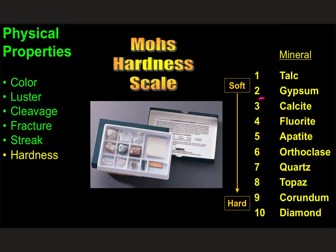Quartz — the most common mineral at the surface of the earth — is number seven. Topaz is eight. Corundum is nine — corundum is actually rubies and sapphires depending on color: red gem-quality corundum is a ruby, blue is a sapphire, green is an emerald. And diamonds are ten — the hardest mineral. Diamonds aren't actually that rare at industrial quality, but large gem-quality diamonds are pretty rare, which is one reason they're expensive.